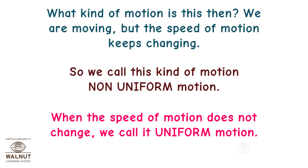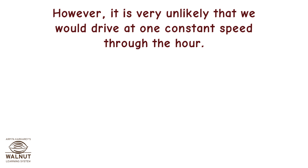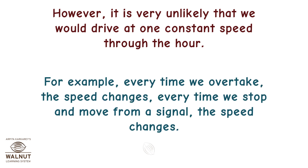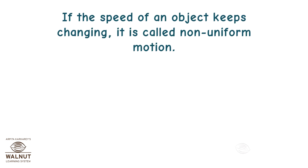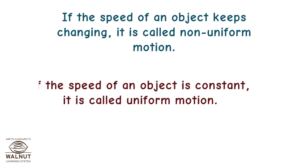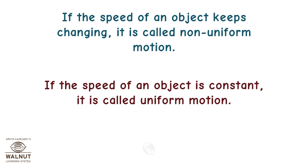When the speed of motion does not change, we call it uniform motion. However, it is very unlikely that we would drive at one constant speed through the hour. Every time we overtake the speed changes. Every time we stop and move from a signal the speed changes. If the speed of an object keeps changing, it is called non-uniform motion. If the speed of an object is constant, it is called uniform motion.